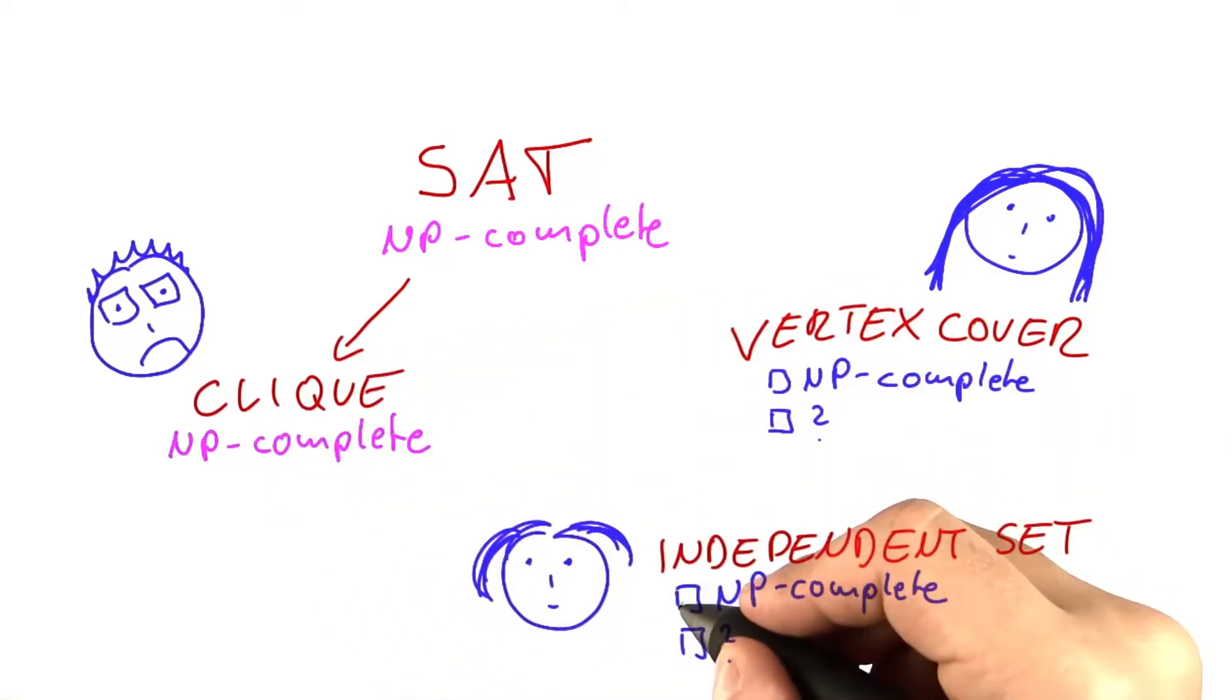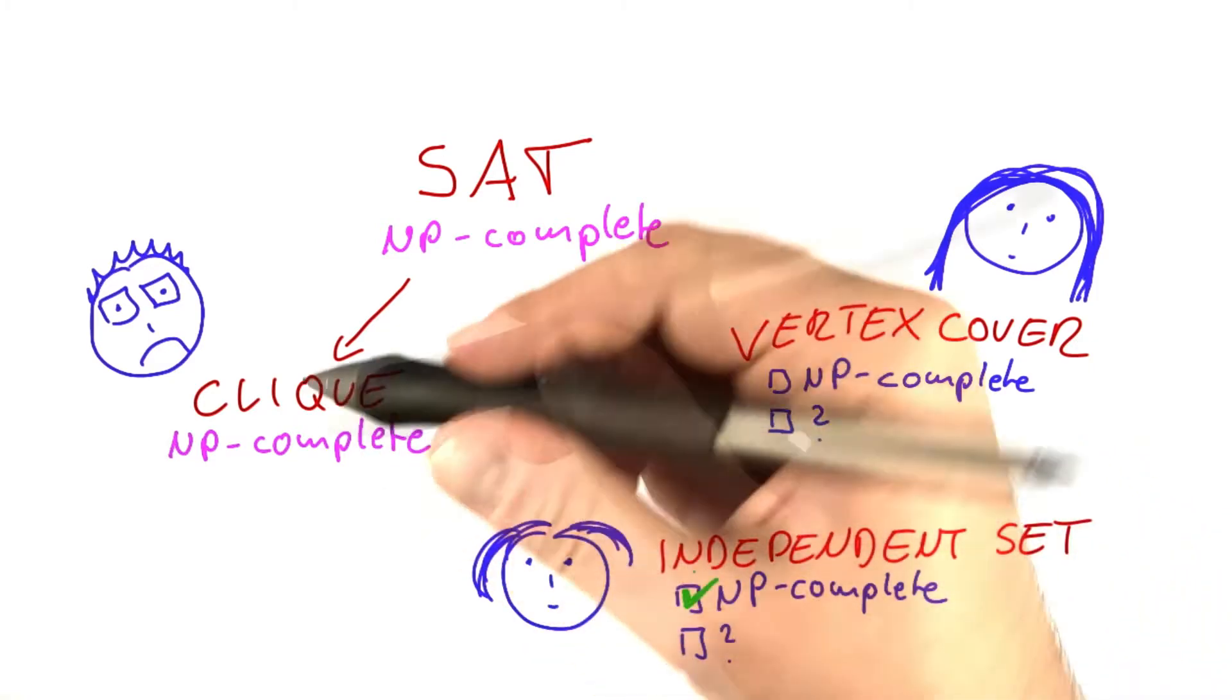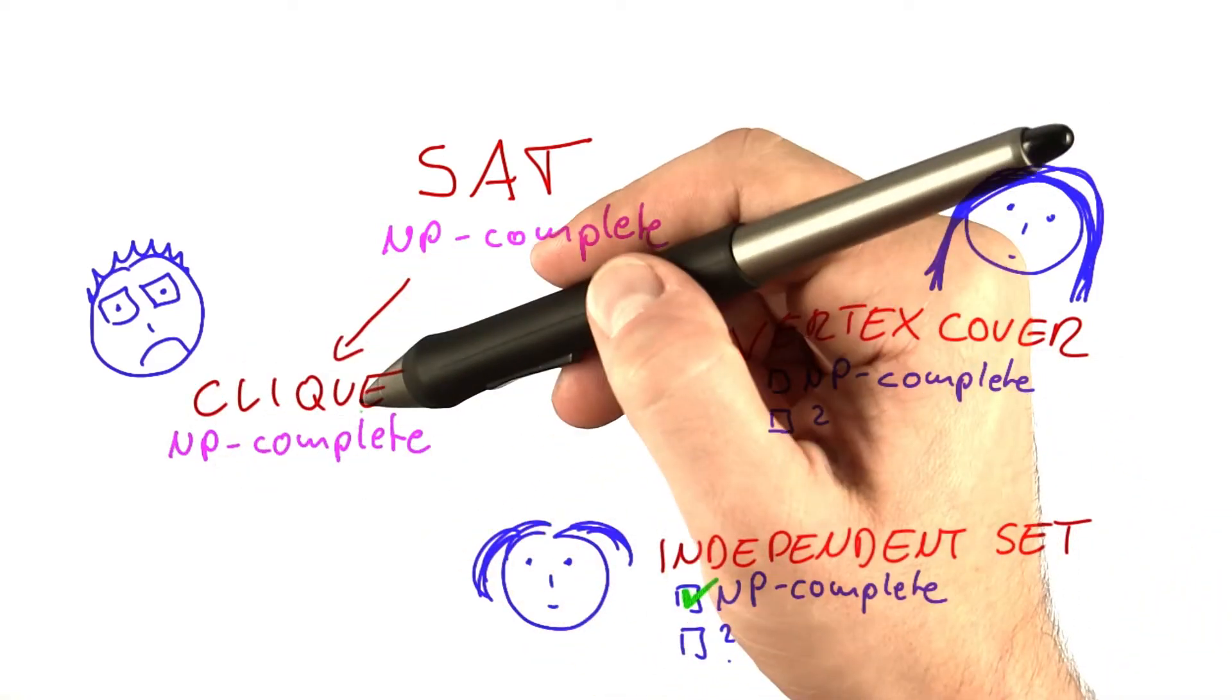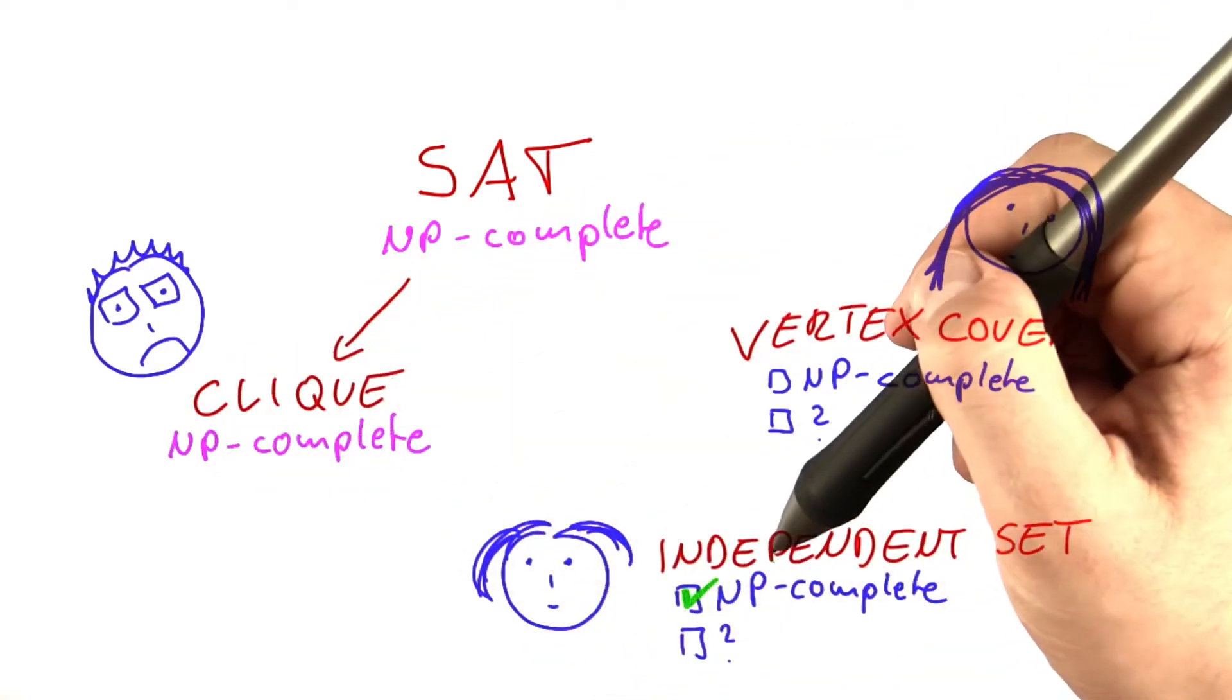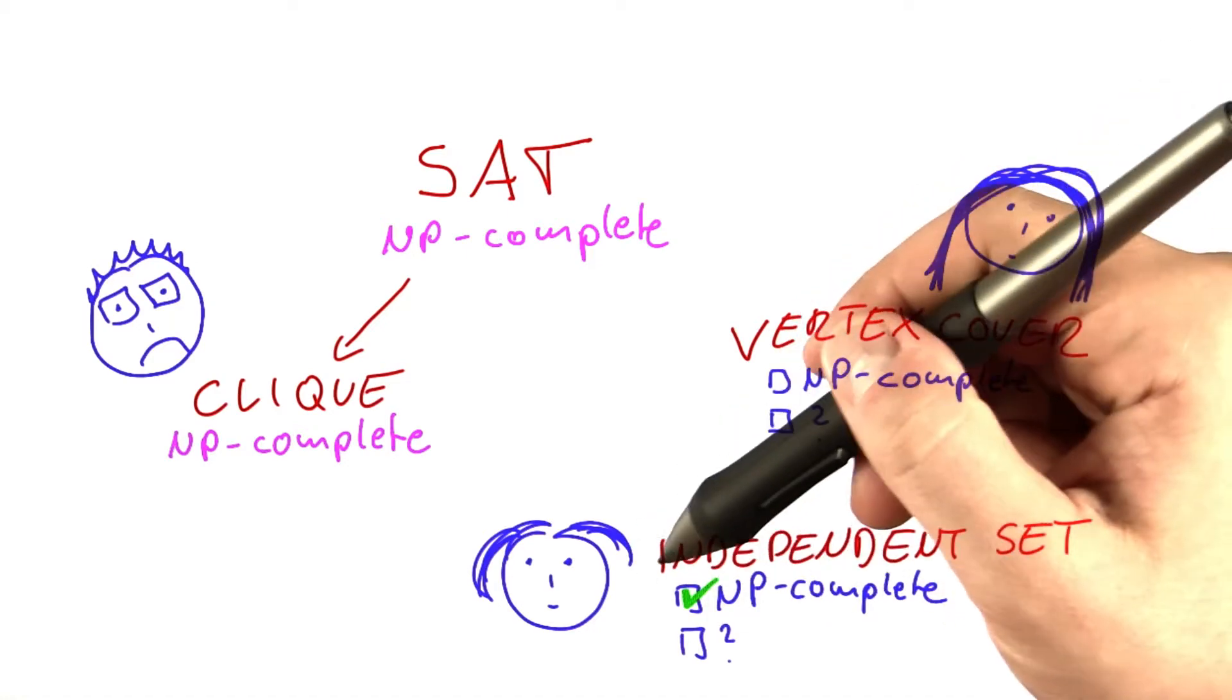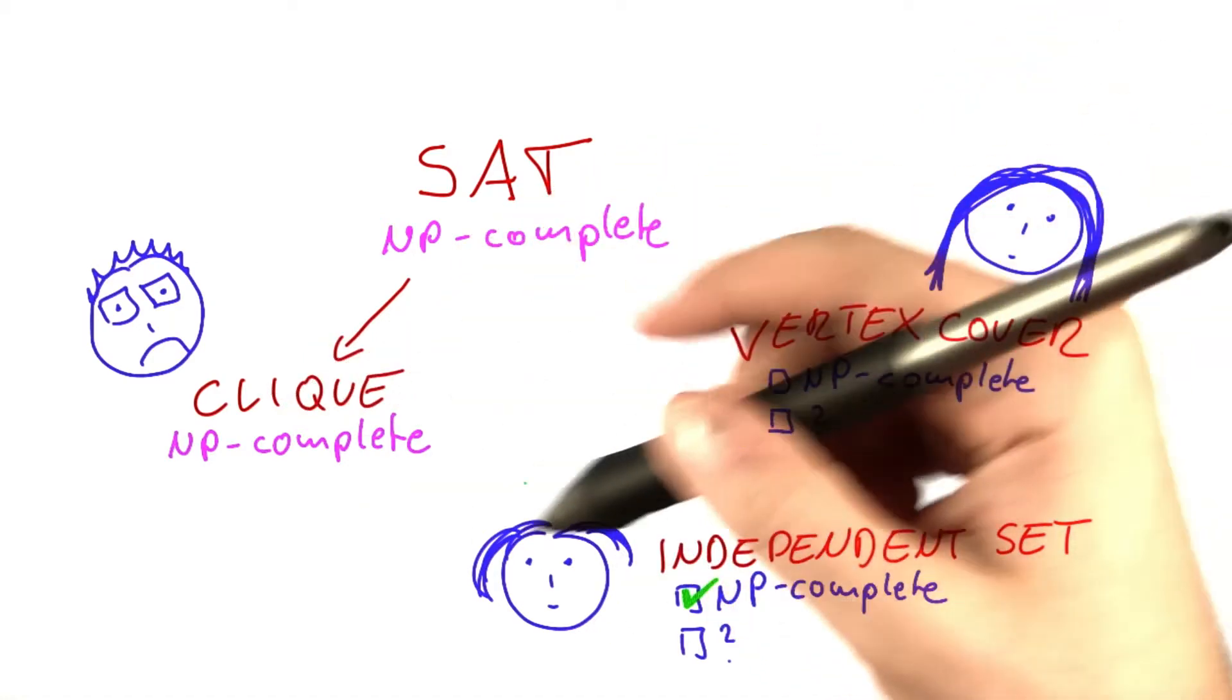Now that we have shown clique to be NP-complete, we can easily say that independent set is NP-complete because we can transform a graph for which you want to solve clique easily into a graph on which you can solve independent set, and then that will give you a solution for clique.